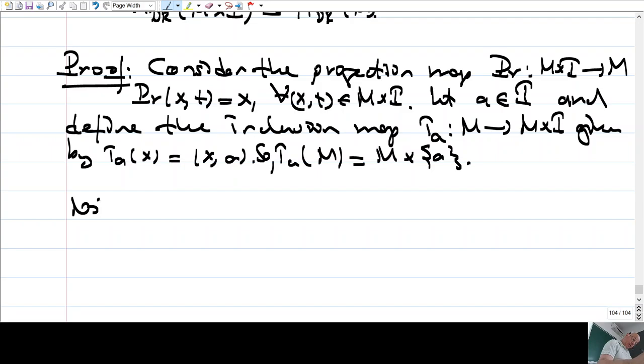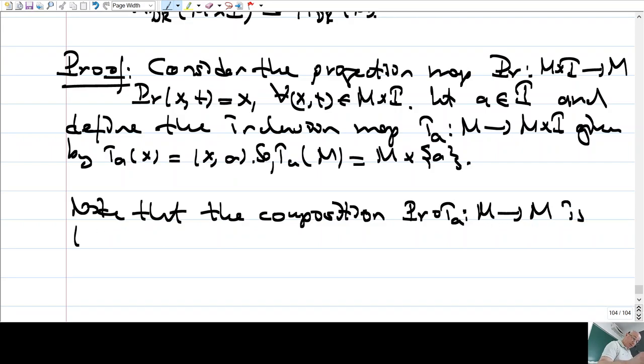Note that the composition - first inclusion and then projection - is the identity map of M.